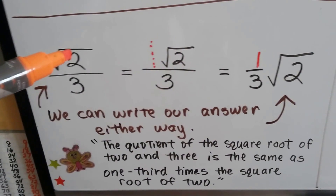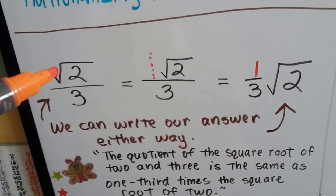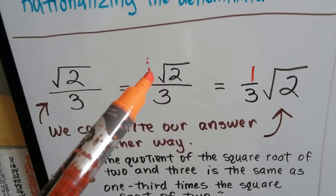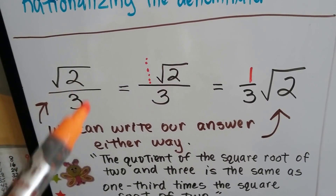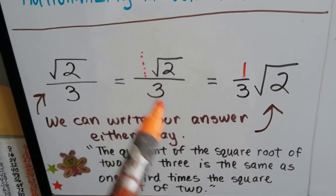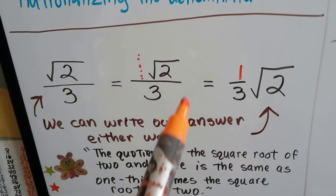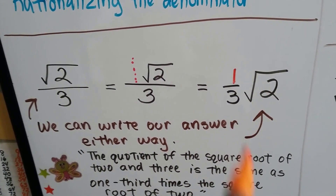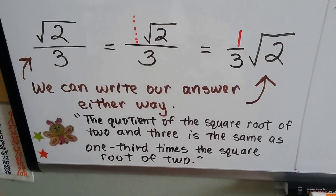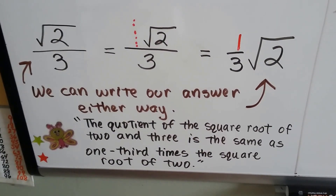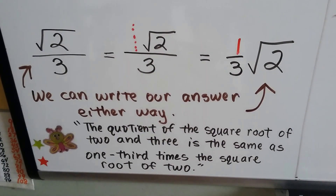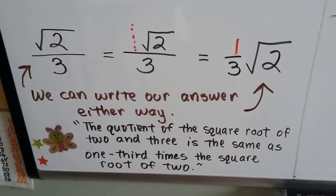When we've got the radical sign up here, there's a little invisible 1 there. We can either write our answer like this, or we can say 1/3 times the square root of 2. Either way is okay. The quotient of the square root of 2 and 3 is the same as 1/3 times the square root of 2.